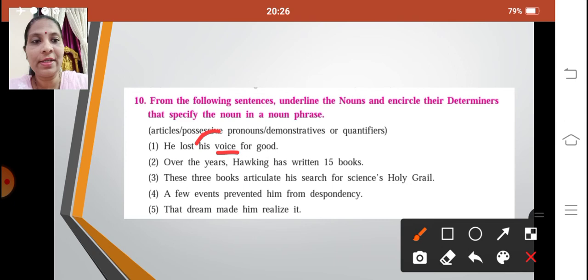So you can see before the noun you will have the determiner. His is the determiner over here. Next: over the years Hawking has written 15 books. Now children, in this sentence we have two nouns: years and books. So you can see over here we have articles, possessive pronouns, demonstratives, or quantifiers. These are the determiners. So there is an article, so that is also a determiner. Then 15 books, yes that is a noun.